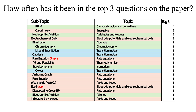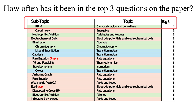When subtopics do come up, some are worth more marks than others. Required practical 10 is consistently one of the biggest topics on the paper — all four times it's been assessed, it's been in the top three most important questions. Quite some way behind that come three subtopics: the calorimetry required practical, nucleophilic addition as a mechanism, and electrochemical cells, which have each been in the top three twice across those seven papers.